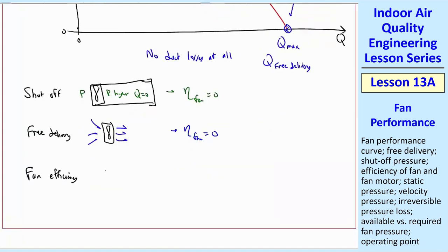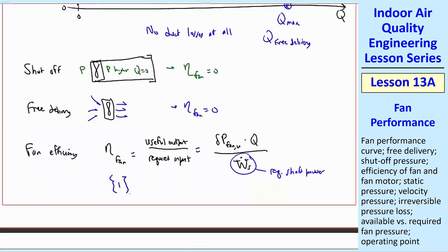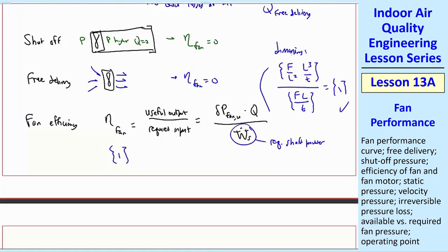We define the fan efficiency as eta fan. All efficiencies are useful output divided by required input. The useful output is delta P fan useful times flow rate Q, divided by W dot S, the required shaft power to run the fan. The dimensions of efficiency are dimensionless — pressure is force per area, Q is volume per time, and power is force times distance per time — all cancel out to one.